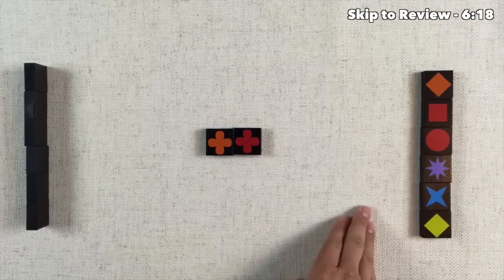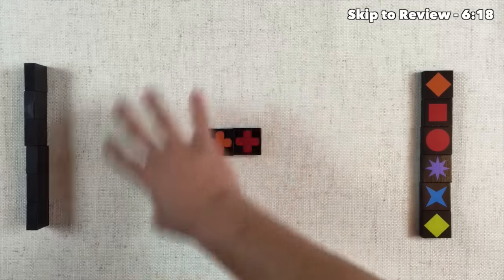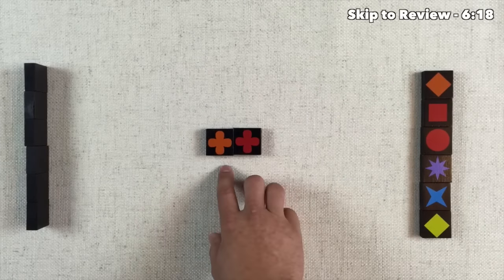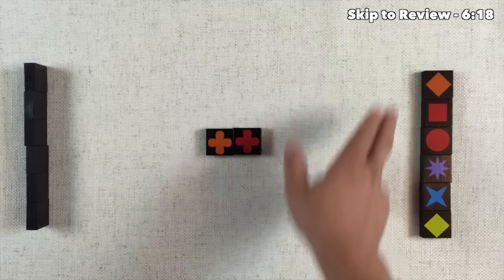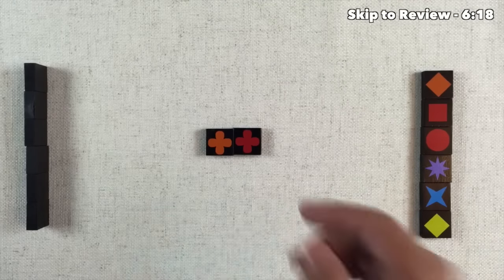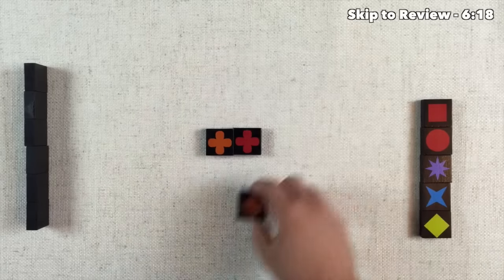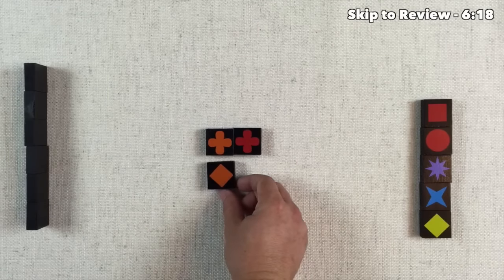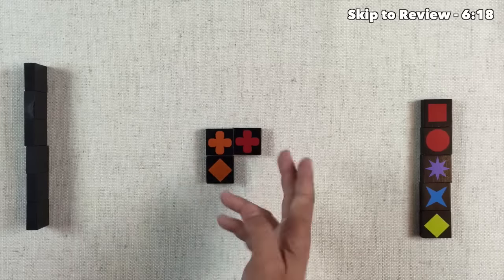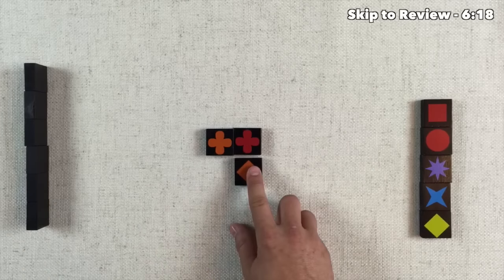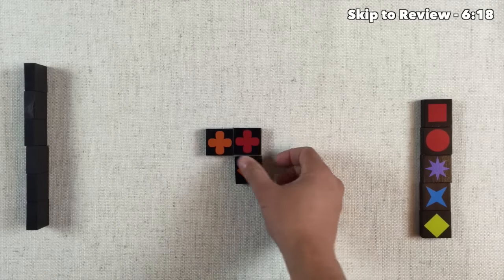It's now the right-hand player's turn, and they must play off of the board state that we have. We have an orange clover and a red clover. They can take this tile here, and they can put it either on top of or below this clover here, because they would match the same color, but not the same symbol.